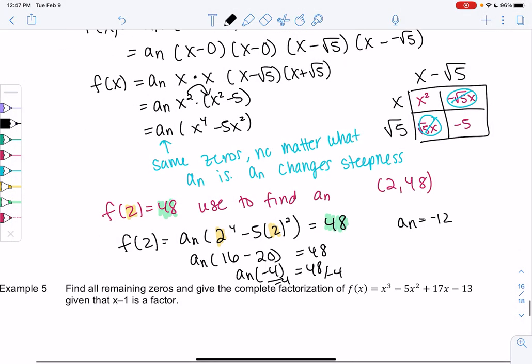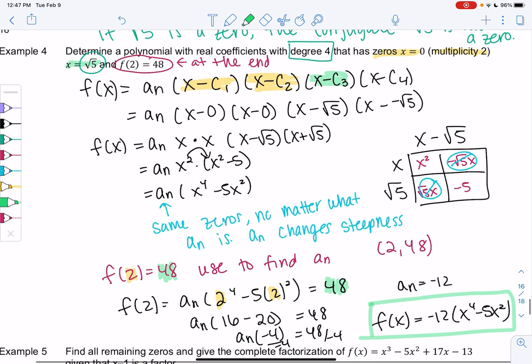So we'll just go ahead and write it out. f of x is negative 12 times x to the 4th minus 5x squared. So that would be the polynomial that satisfies the conditions above. It has zero at 0, and it has a zero at root 5 and negative root 5, and it goes through the point (2, 48). All right.